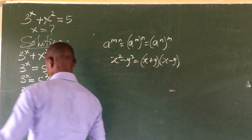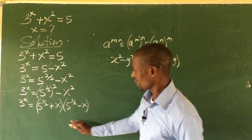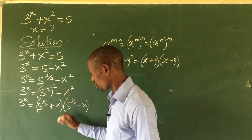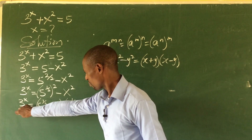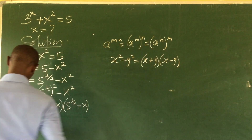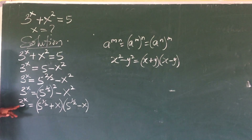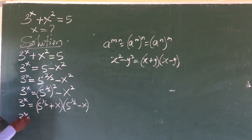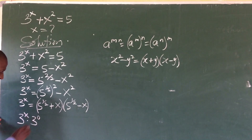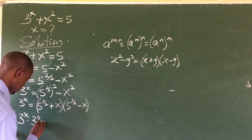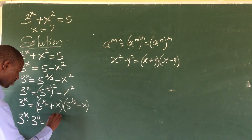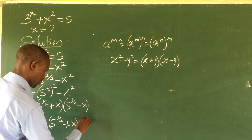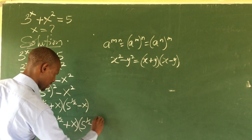Now we want to apply the product rule to this side of the equation. Before we can apply the product rule, we must have a product of two entities here. So I multiply the whole of 3^x by 1, which gives us 3^x · 3^0 (since 3^0 = 1). So we now have 3^x · 3^0 = (5^(1/2) + x)(5^(1/2) - x).